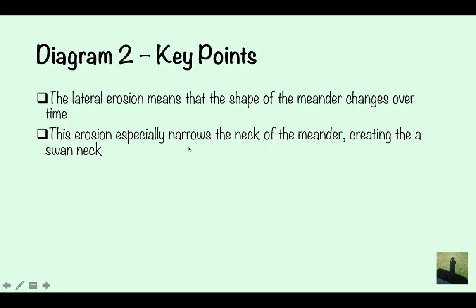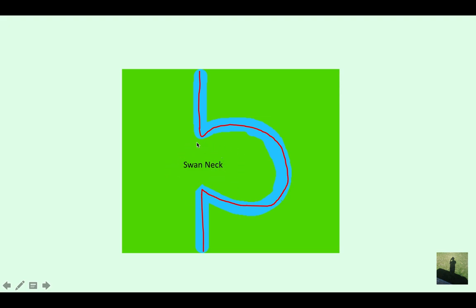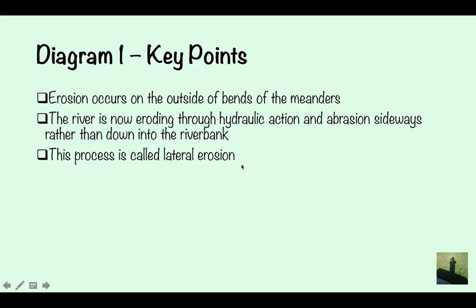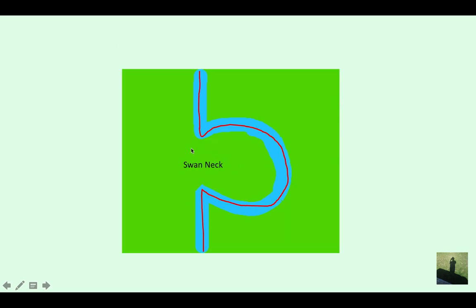This erosion especially narrows the neck of the meander, creating this swan neck. This bit here, the neck of the meander, as it becomes more eroded. This is a lot smaller than if you look at here. So that's a lot bigger than this here, this swan neck here.